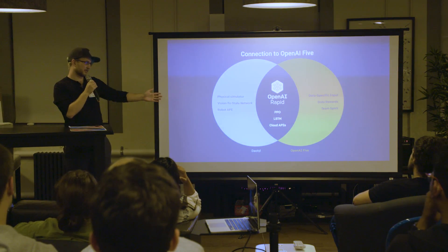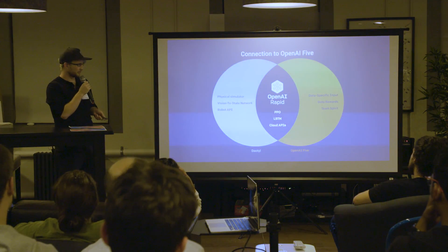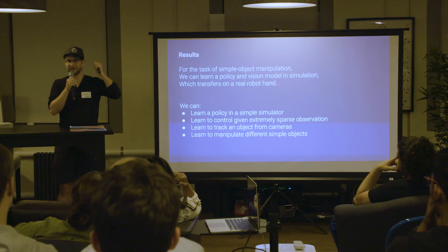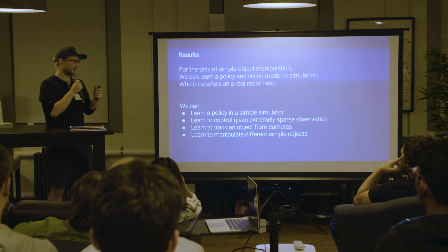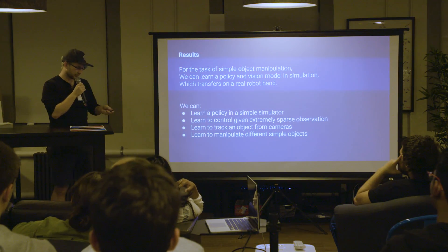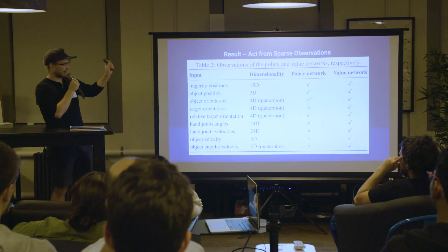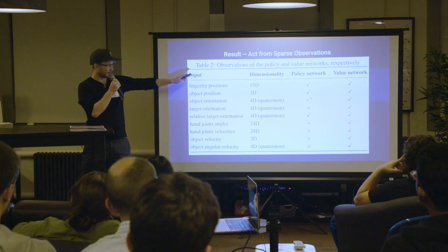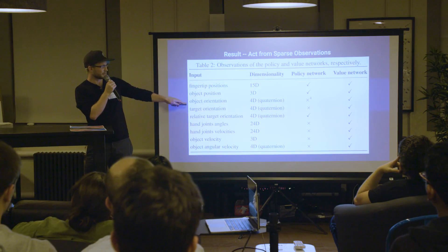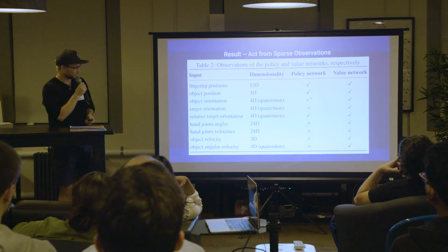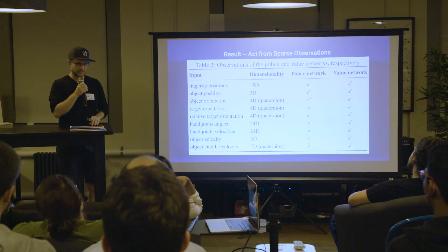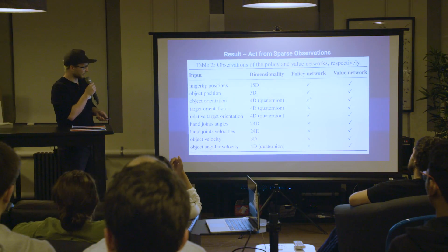The most important result is that yes, we are able to do this task — simple object manipulation, learning a policy with a vision model purely from simulated data that transfers to the real robot hand. Sub-results include acting from sparse observations. Interestingly, one observation input marked 'no' was listed in the paper but was accidentally omitted due to a software bug, and it still worked — which was surprising. There are also counterintuitive findings discussed in the blog post.